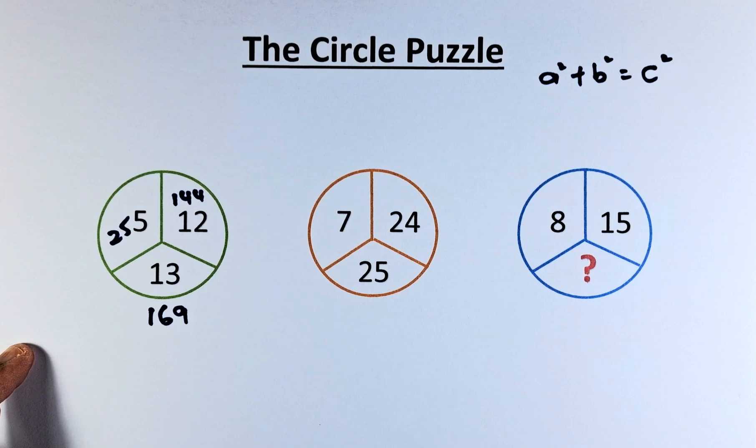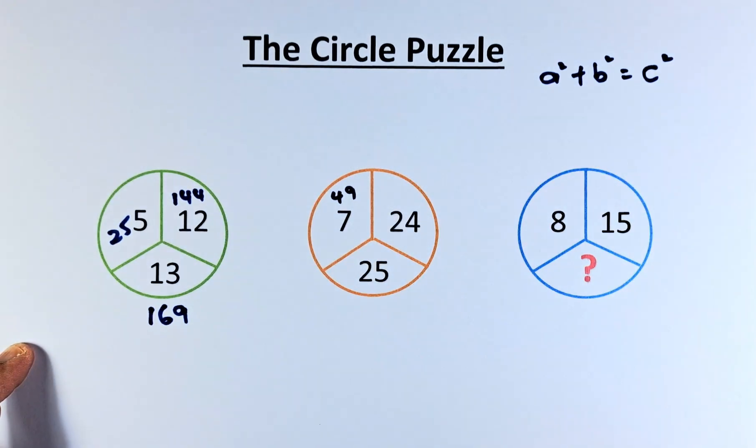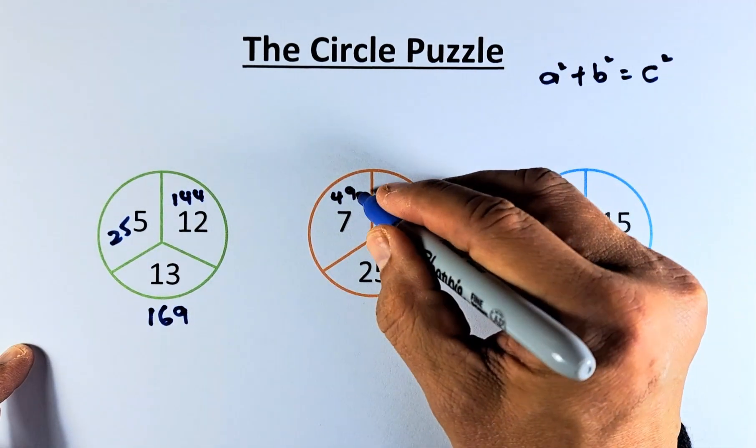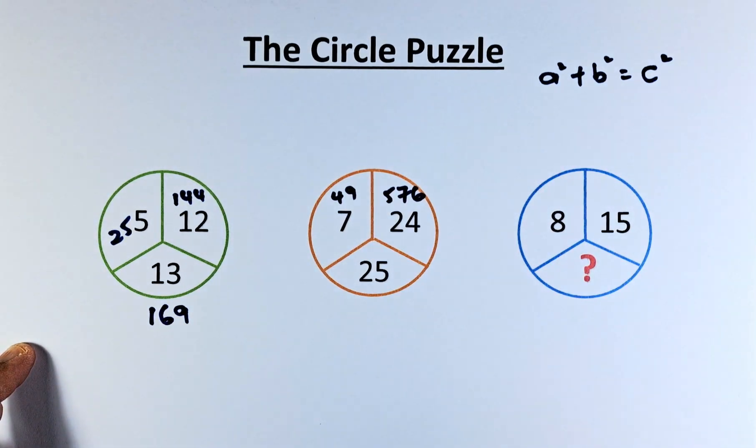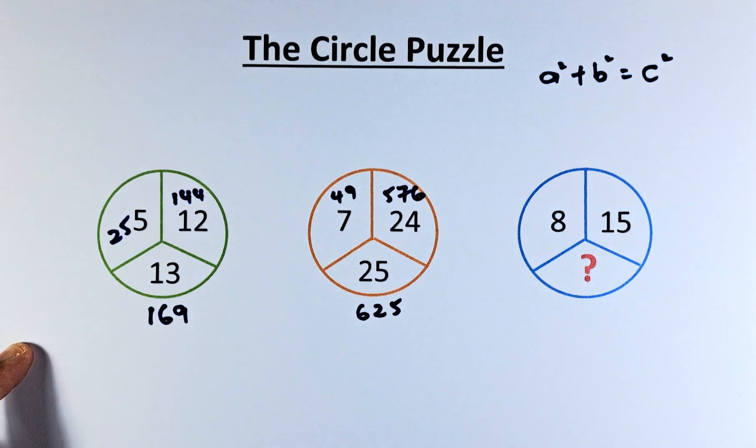Similarly, 7, 24, and 25. 7² is 49, 24² is 576, and when you add 49 + 576, it's 625, which equals 25².